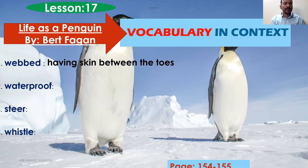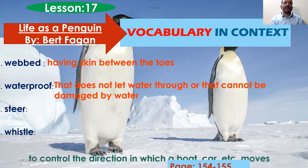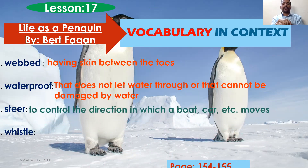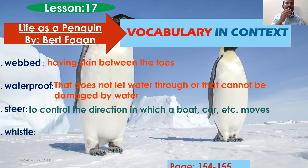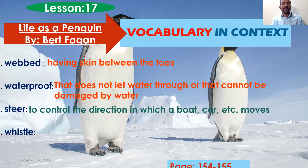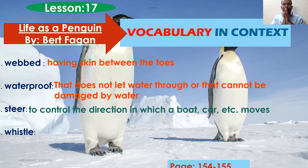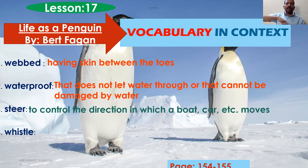Number two, 'waterproof' means it doesn't let water go through, or it can't be damaged because of water. If you have a waterproof mobile phone or waterproof watch, it means water will not damage it because water will not go through. Number three, 'steer' means to control the direction in which a boat, car, or something moves. Penguins can swim skillfully because they have webbed feet between their toes.